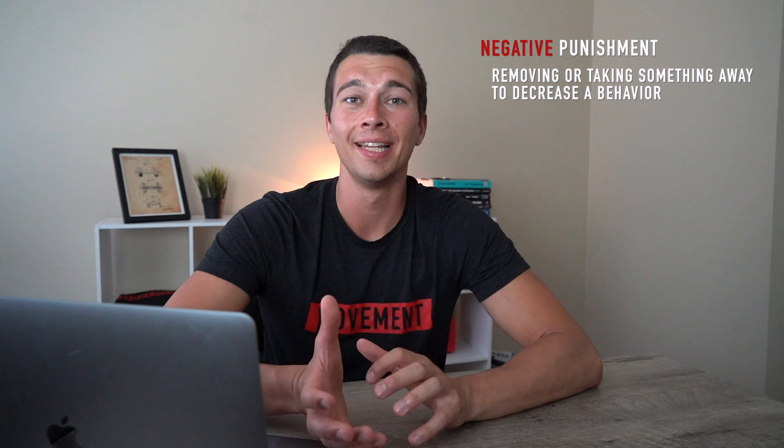Now let's talk about negative punishment. In the case of negative punishment, we're taking something away to decrease the behavior. So let's say during our weight room session we see that athletes are using improper spotting technique — they're distracted and not paying attention — and we had planned yoga at the end of the session. If we take away that yoga session because they didn't do proper spotting technique, that would be an example of negative punishment.